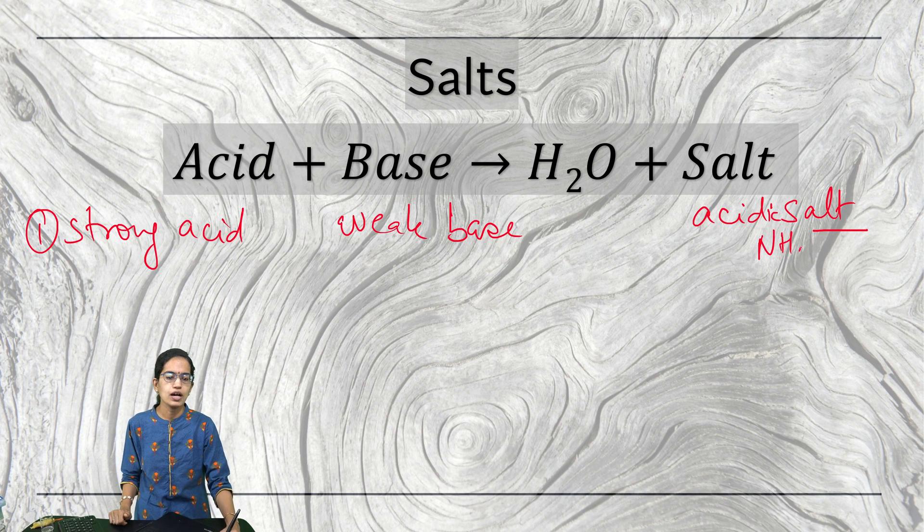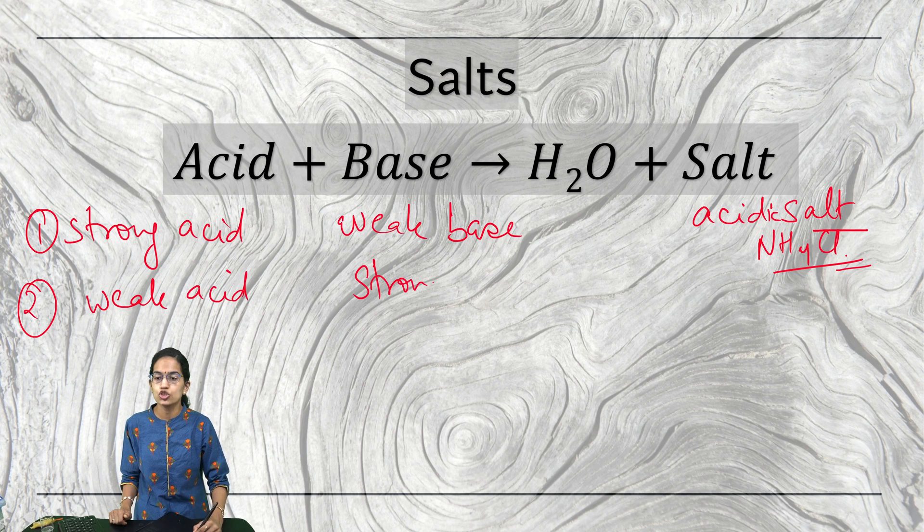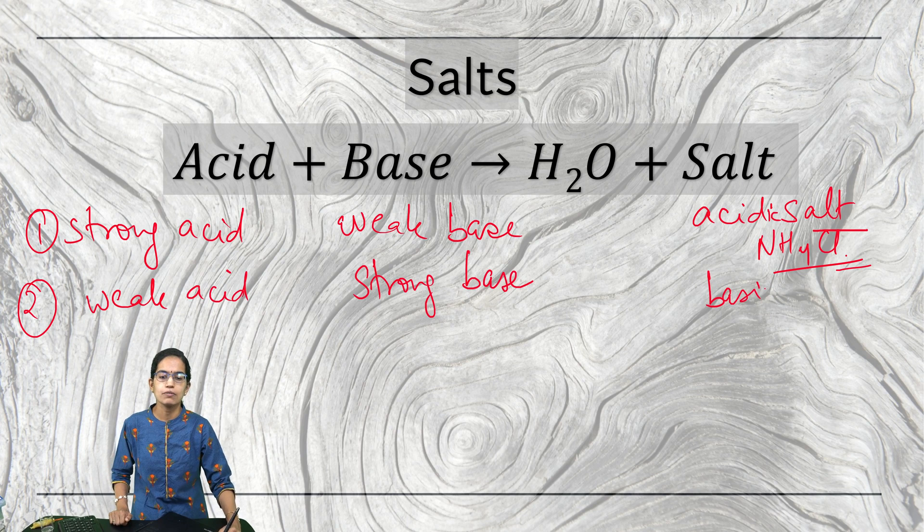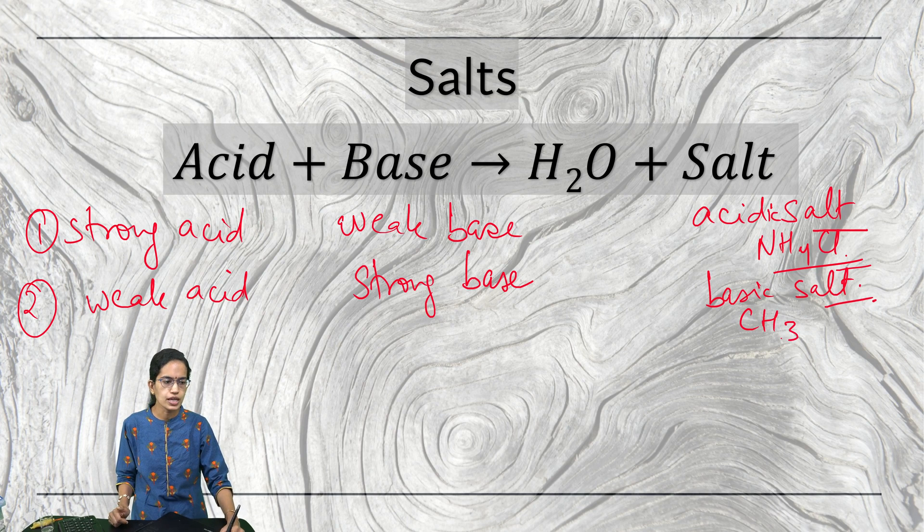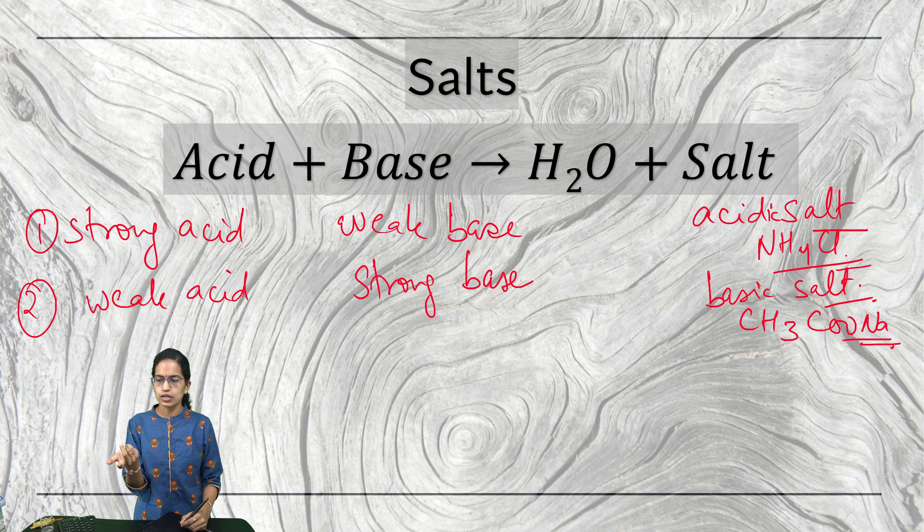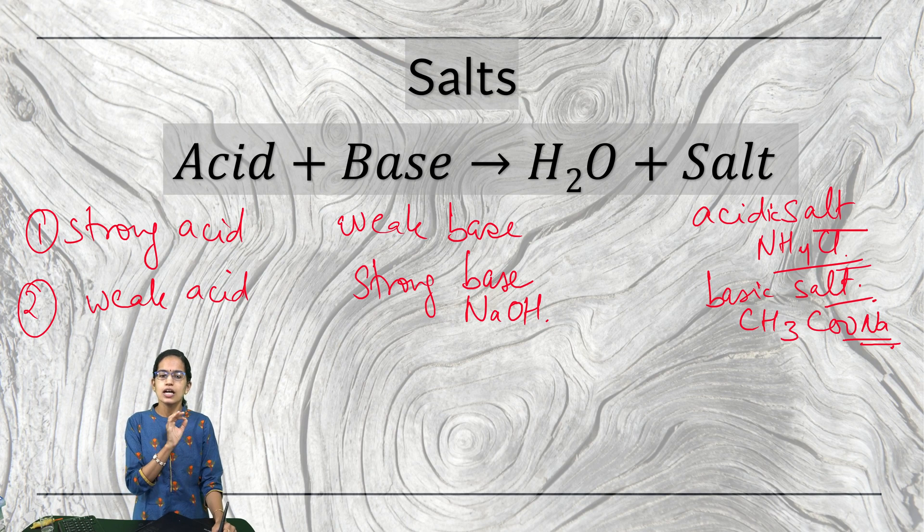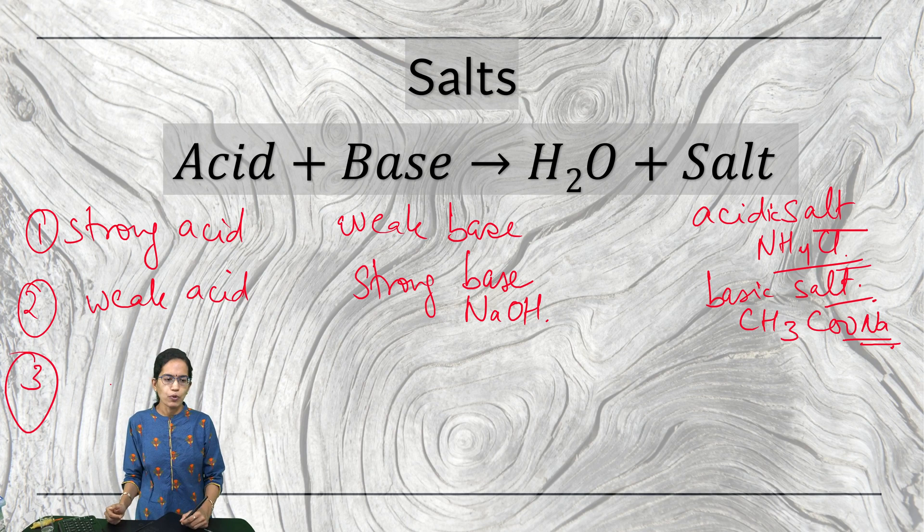The next example is when you have a weak acid. This weak acid reacts with strong base. When the base is strong, we call this as a basic salt. What would be a good example? A good example of basic salt would be sodium acetate. Sodium acetate is formed by weak acid which is the acetic acid. Acetic acid is a weak acid which we can take into account and then it reacts with a strong base. What is a strong base? NaOH or sodium hydroxide. When it reacts with sodium hydroxide, there is a basic salt which is the sodium acetate which is formed.